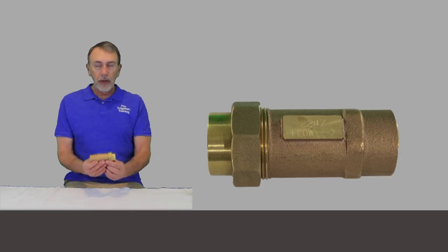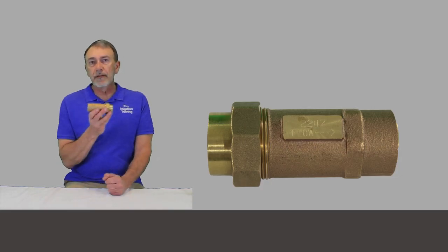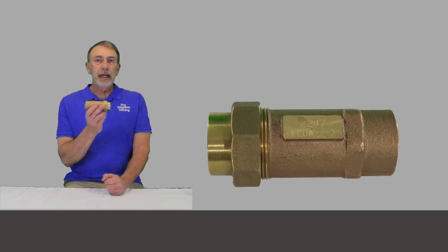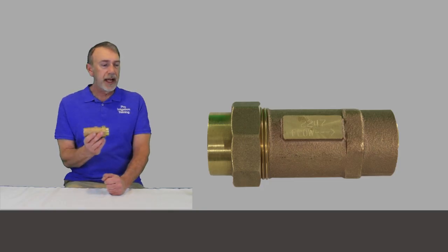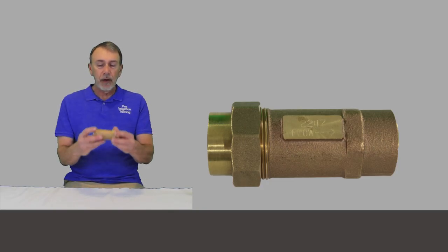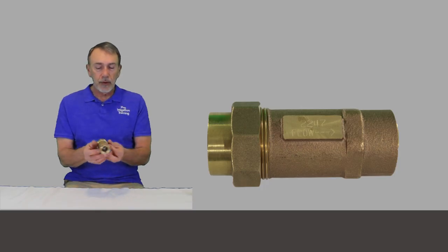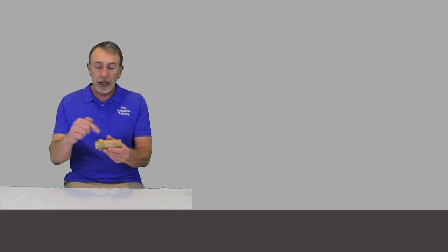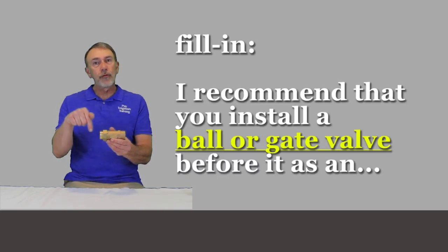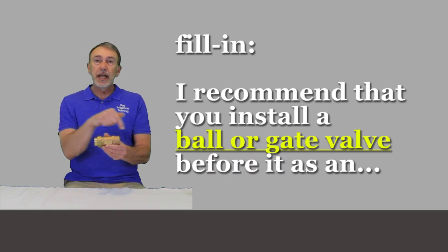Now when you're going to install these, almost always this should be the very first component in the irrigation system. We've already discussed that, so I would suggest, now these have a direction of flow, so the direction of flow on this one, let's say it's going this direction here, right? It's got a union on this side. I would suggest you put either a gate valve or a ball valve right here as an isolation valve for your irrigation system.